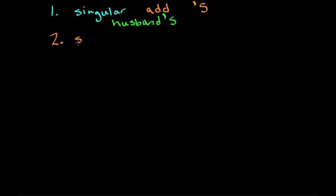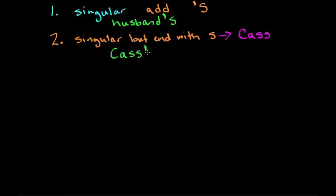Now there's another rule. When it's singular but ends with S, I'm going to take a look at a name. A name of a friend. Her name is Cass. So this is a singular, she's just one person, but it ends in the S. So what we say is Cass's. So we just add that apostrophe there. So I say Cass's cat isn't friendly.